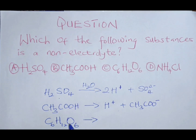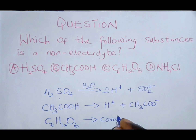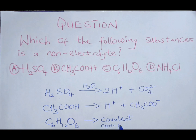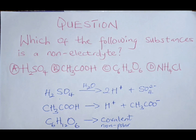Glucose cannot dissociate in water to form ions, because the bonding in glucose is covalent bonding and it is non-polar. It does not have a cation ending and it does not have an anion ending. So glucose is a non-electrolyte.